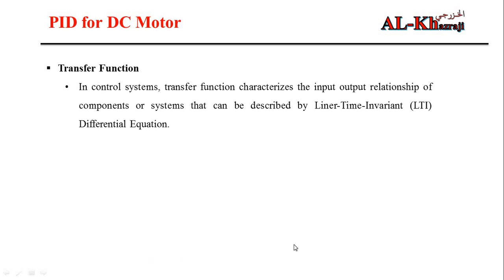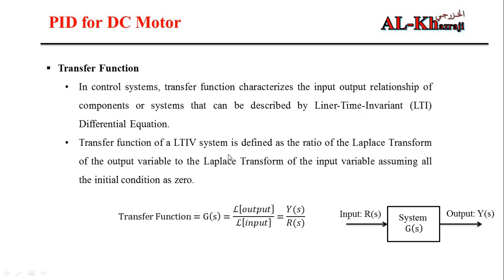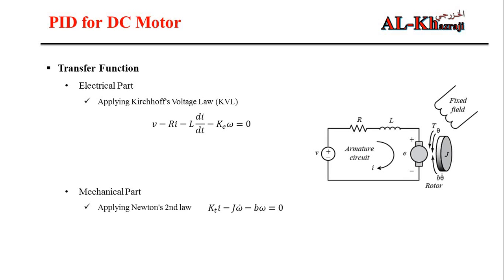The transfer function of any control system can be described by the linear time-invariant differential equation. By taking the Laplace transform, the transfer function G(s) is the Laplace of the output divided by the Laplace of the input — Y over R. In our case, the output is the rotational speed omega and the input is the input voltage V.